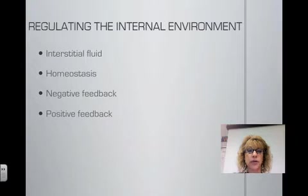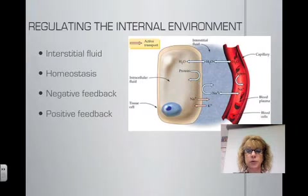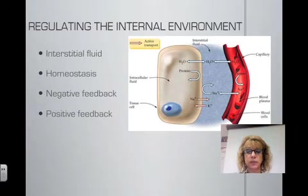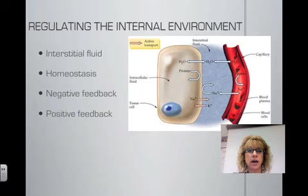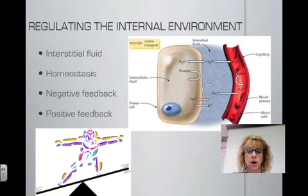One of the most important things that your body needs to do to keep you healthy is to regulate your internal environment. A big player in regulating the internal environment is interstitial fluid. Interstitial fluid is the internal environment of vertebrates — it fills the spaces between cells. It's where nutrients and waste are exchanged between tissues and the blood vessels, specifically the capillaries. Your body needs to constantly maintain an internal environment in order to keep you healthy, and that is called homeostasis.